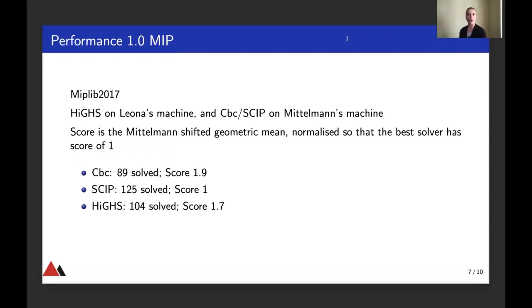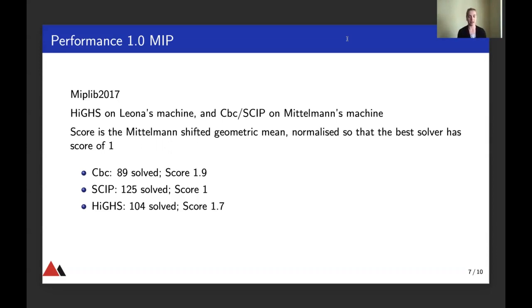Here you see performance for MIP benchmarks, also very recent. The timing of HICE is done on Leona Gottwald's machine. Leona is the person who wrote the MIP solver, and the times for CBC and SCIP are from Hans Mittelmann's machine. The score is Mittelmann's shifted geometric mean normalized so that the best solver has a score of one. SCIP is first with a score of one, and HICE has 1.7, which is already less than CBC. Leona is responsible for the MIP solver and its great performance. She joined us from Germany last year and has done spectacular work over the past months.